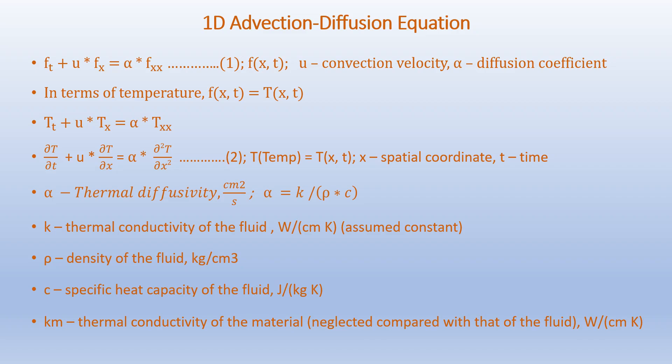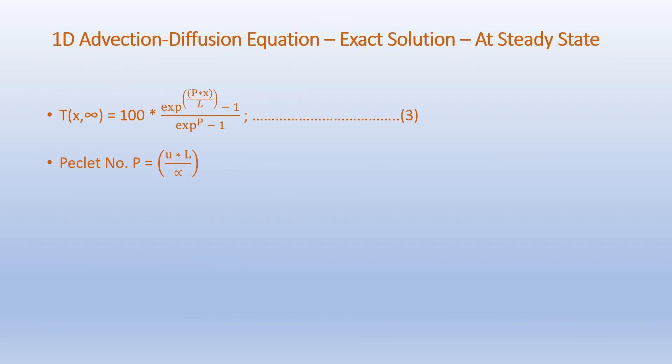K is the thermal conductivity of the fluid in watts per centimeter kelvin. Rho is the density of the fluid in kilograms per centimeter cubed. C is the specific heat capacity of the fluid in joules per kilogram kelvin. The thermal properties of the porous material itself are neglected, as we consider those properties do not govern the advection diffusion problem compared with the thermal properties of the fluid. The exact solution at steady state is given as T(x, infinity) equals 100 times (exp(Px/L) minus 1) divided by (exp(P) minus 1), which can be found in standard textbooks.